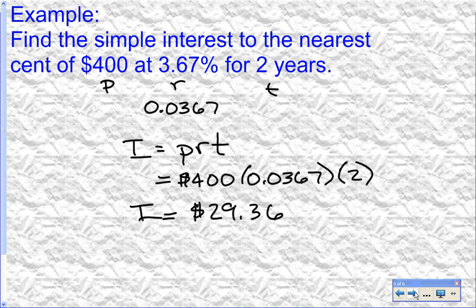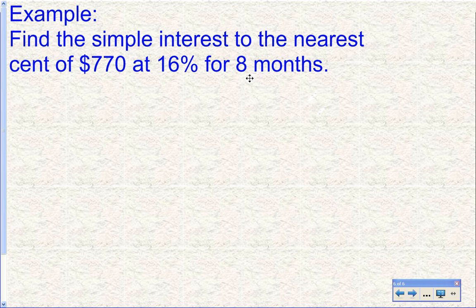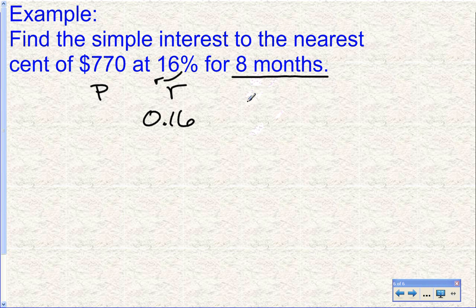All right. And now the last example, we'll do one with months. So we have one with eight months instead of years. Find the simple interest to the nearest cent of $770. That's my principal. At 16%, that's my rate. Move the decimal point two places to the left. So it's 0.16. Eight months for my time. I need to use 8 divided by 12.